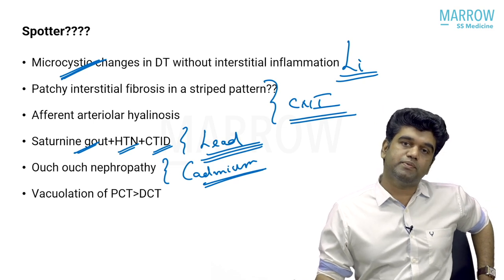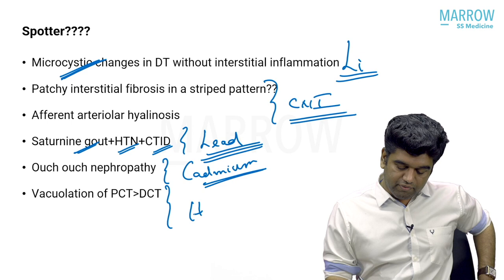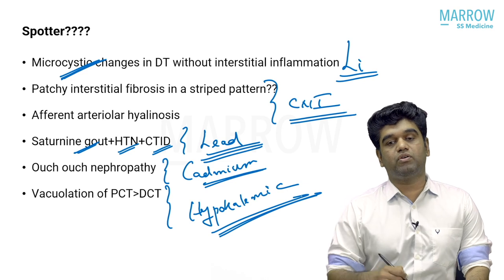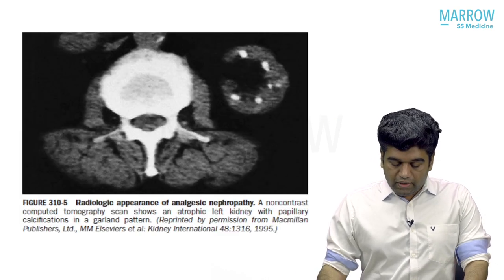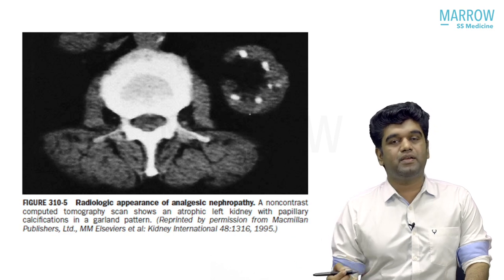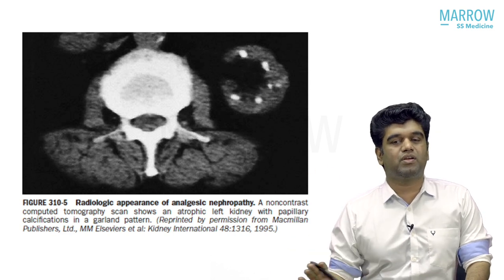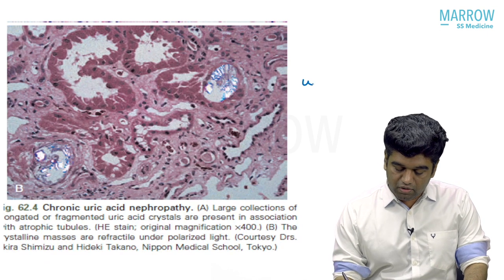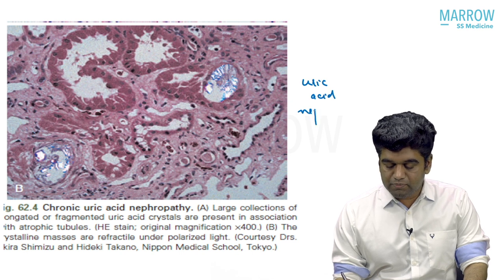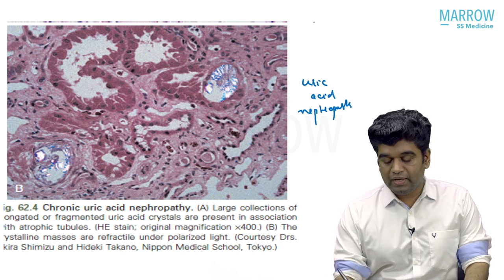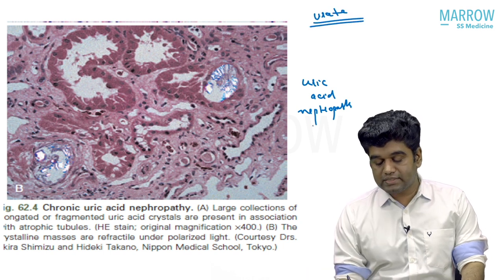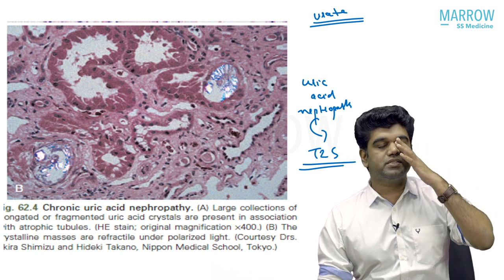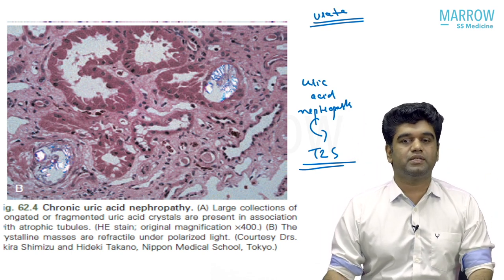Hypokalemic nephropathy produces vacuolation of both proximal and distal tubules, with PCT more affected than DCT — a very rare entity. Analgesic nephropathy shows papillary necrosis and papillary calcification — only historical importance. Uric acid nephropathy: fragmented uric acid crystals on biopsy. Note: chronic hyperuricemia causing CKD is better called 'urate nephropathy' to distinguish from 'uric acid nephropathy' which refers to tumor lysis syndrome. Hypercalcemia causes interstitial fibrosis with dense calcium deposits and intraluminal calcium plaques.